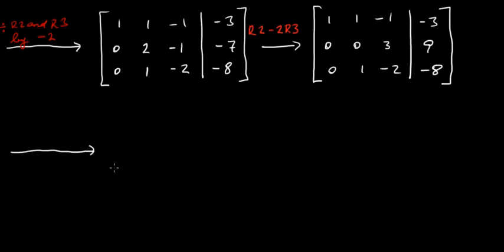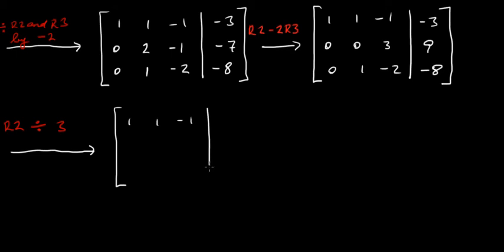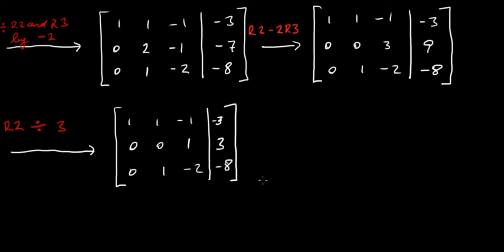Next I'm going to take row two and divide it by three. Row one is unchanged: 1, 1, minus 1, minus 3. Row two becomes: 0, 0, 1, 3. Row three is unchanged: 0, 1, minus 2, minus 8.